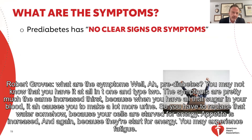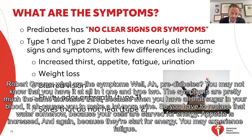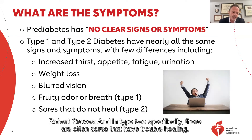What are the symptoms? With pre-diabetes, you may not know that you have it at all. In type 1 and type 2, the symptoms are pretty much the same — increased thirst, because when you have all that sugar in your blood it causes you to make a lot more urine, so you have to replace that water. Because your cells are starved for energy, appetite is increased, and you may experience fatigue. You may even have weight loss if you have undiagnosed diabetes, because of that energy deficit in the cell. Oftentimes there's blurred vision. With type 1 diabetics, they may have a fruity odor to the breath. And in type 2 specifically, there are often sores that have trouble healing.